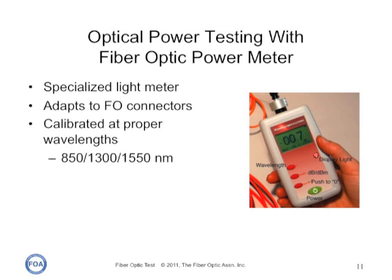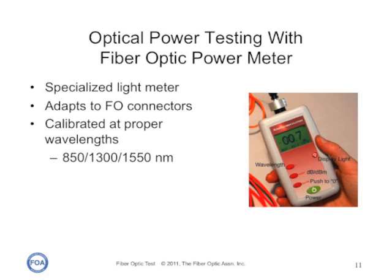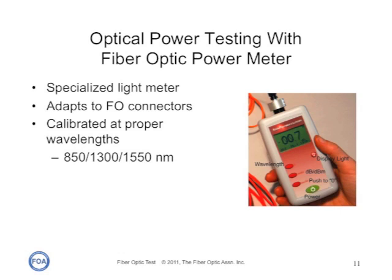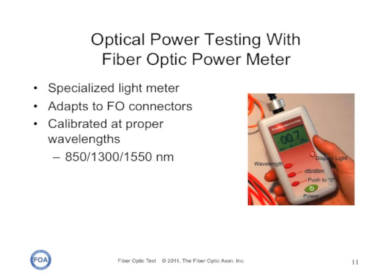A standard test with fiber optic instrumentation is optical power — for example, how much power comes out of a transmitter, or is received at the receiving end of a communication system. Power meters are also used for loss testing. It's basically a specialized light meter adapted to fiber optic connectors and calibrated at the proper wavelengths, usually 850, 1300, and 1550 nanometers, and the calibration is traceable to international standards.